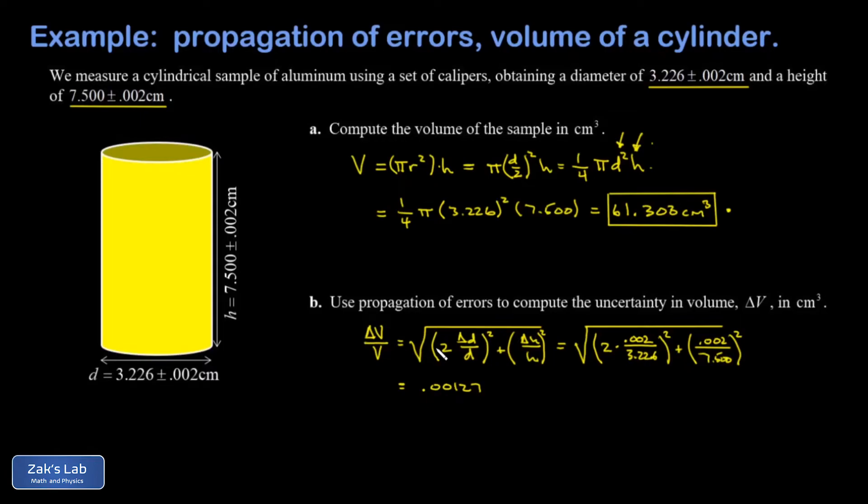Now this is the relative uncertainty in the volume - in other words, you think of it as a percent uncertainty, so it's about one-tenth of one percent. To get the actual uncertainty in the volume we need to multiply both sides by that V that's in the denominator.